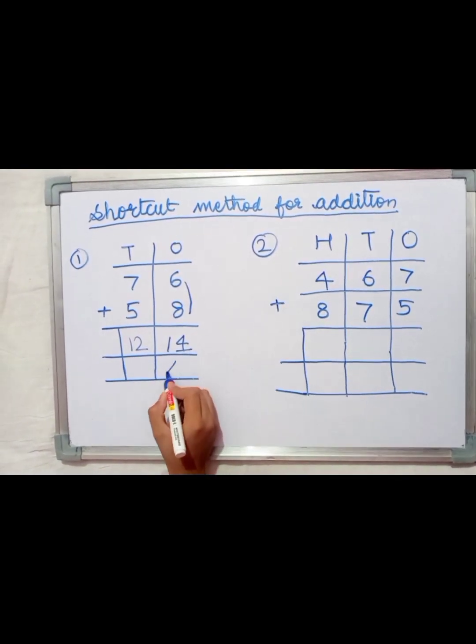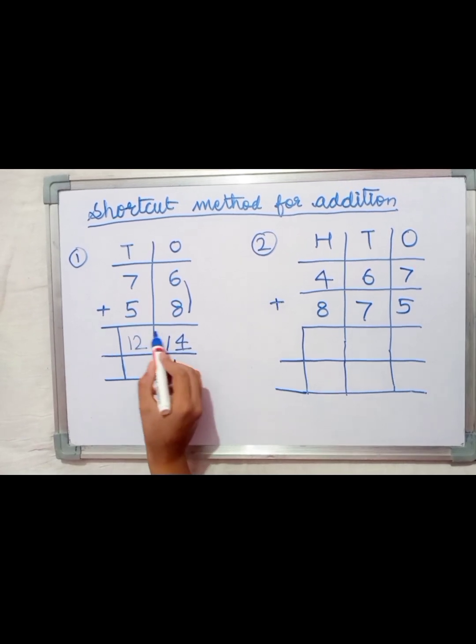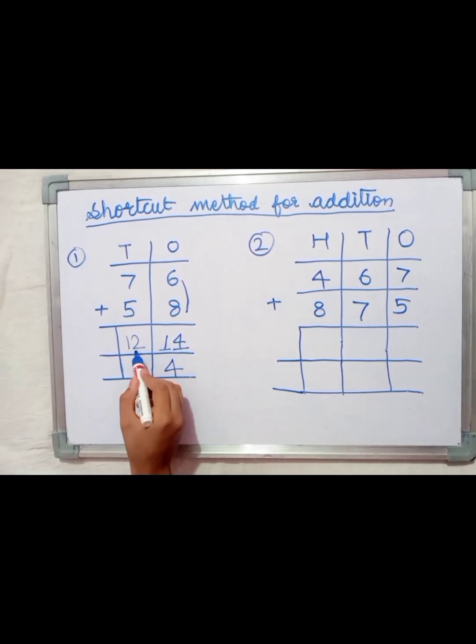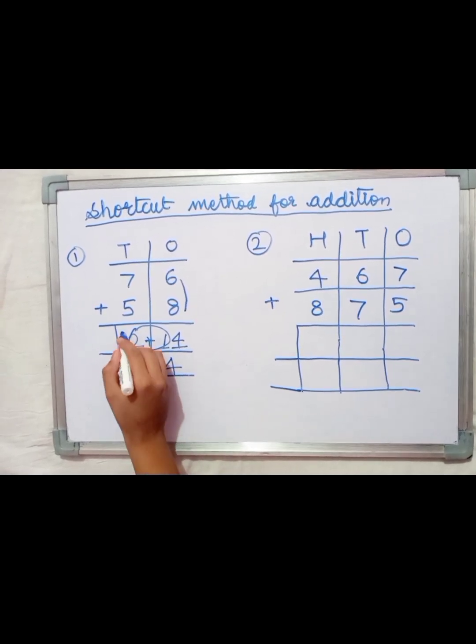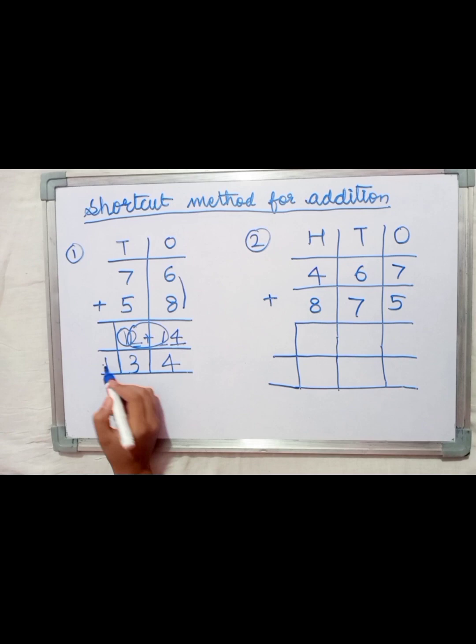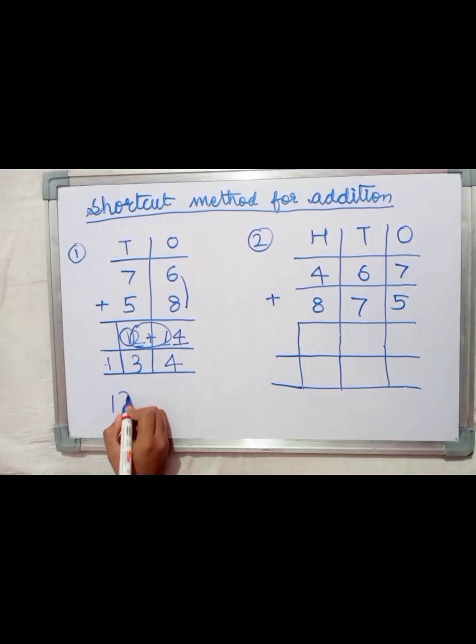Write the 4 as is. Add the 1 and the 2 to get 3. Then add 1 and 3. Our answer is 134.